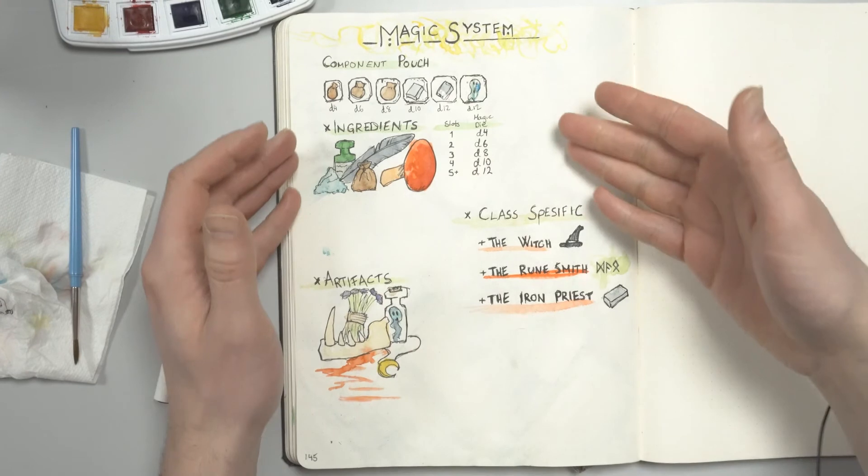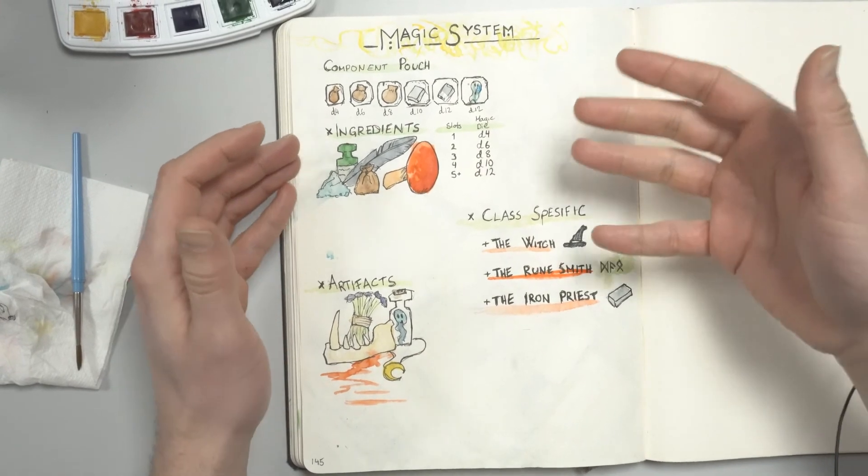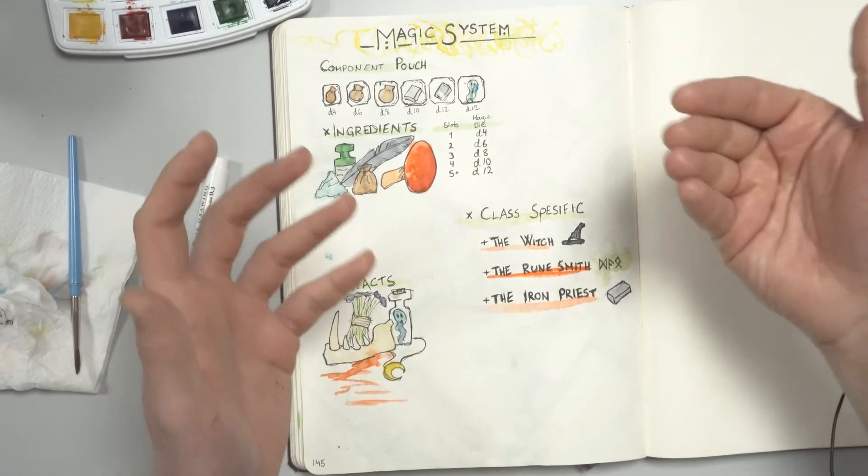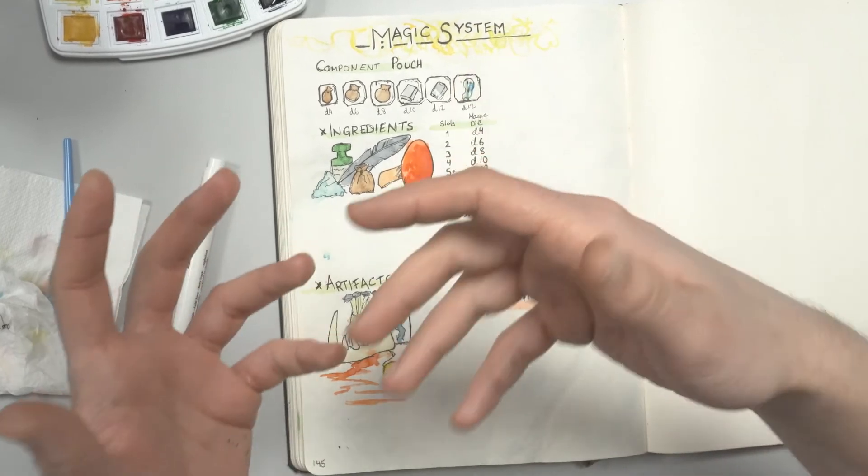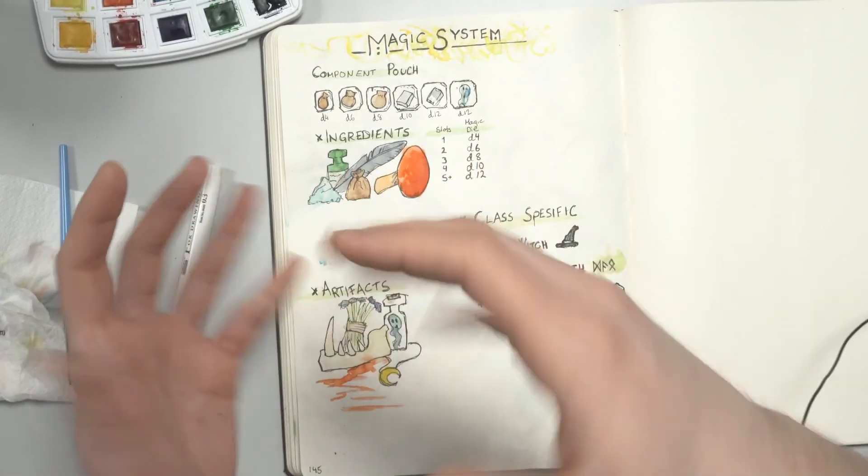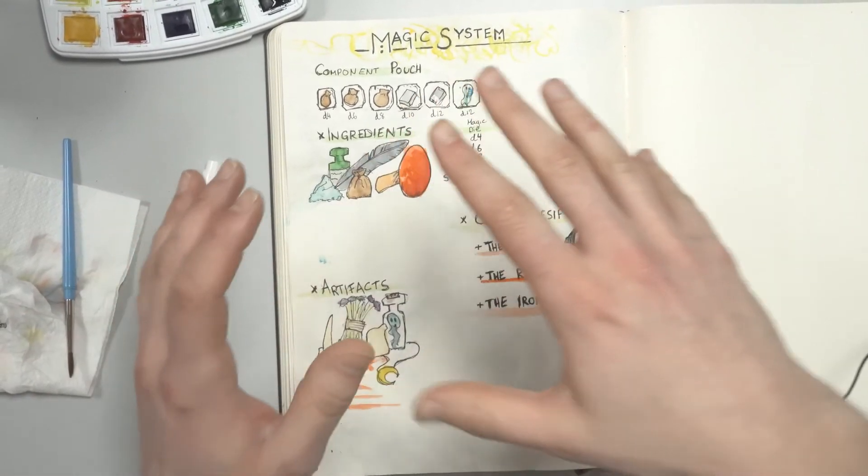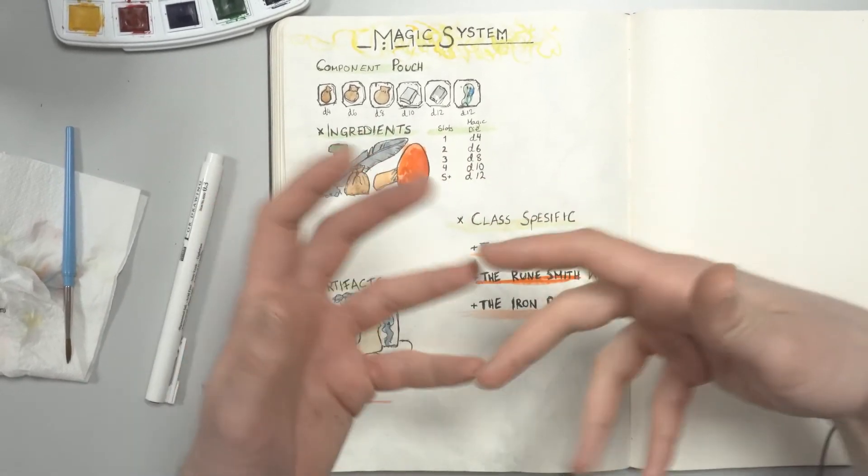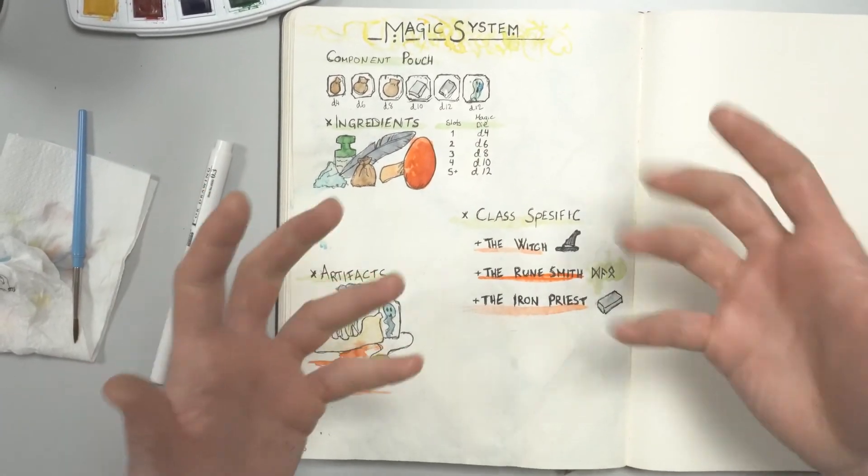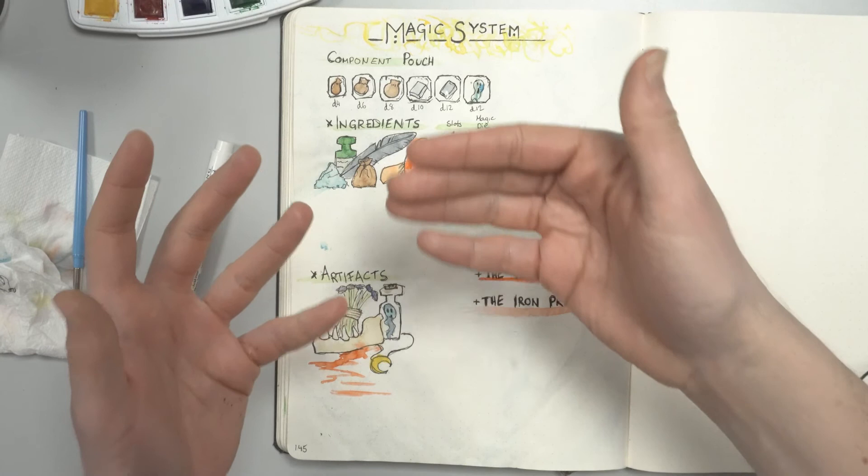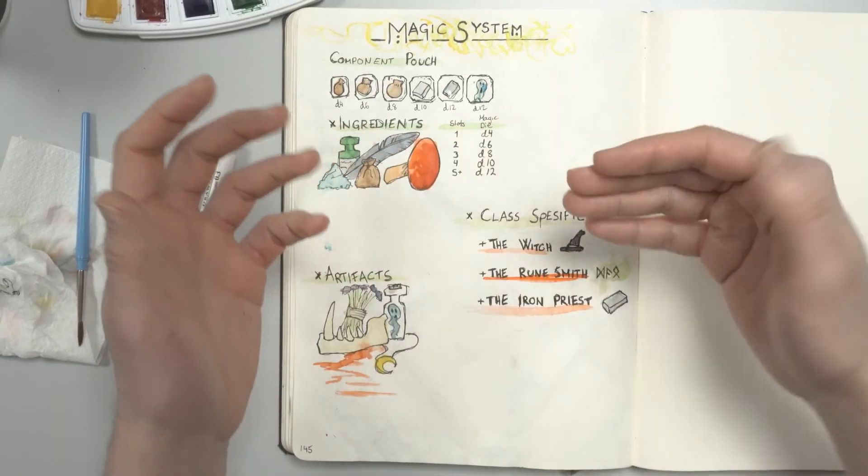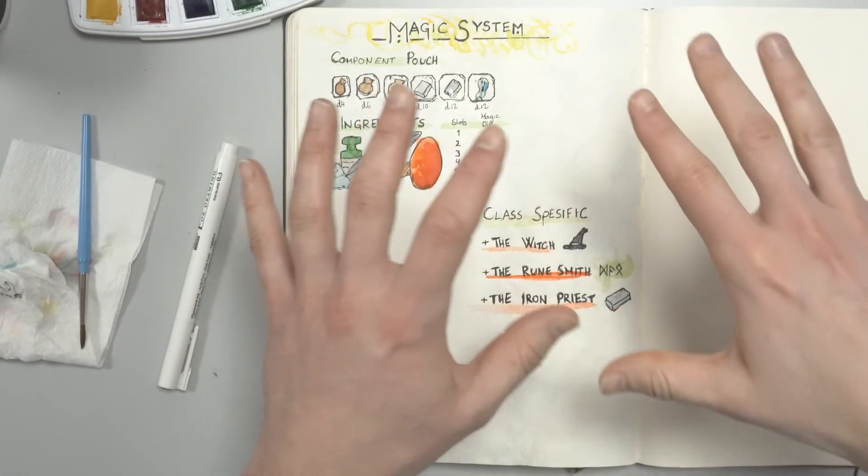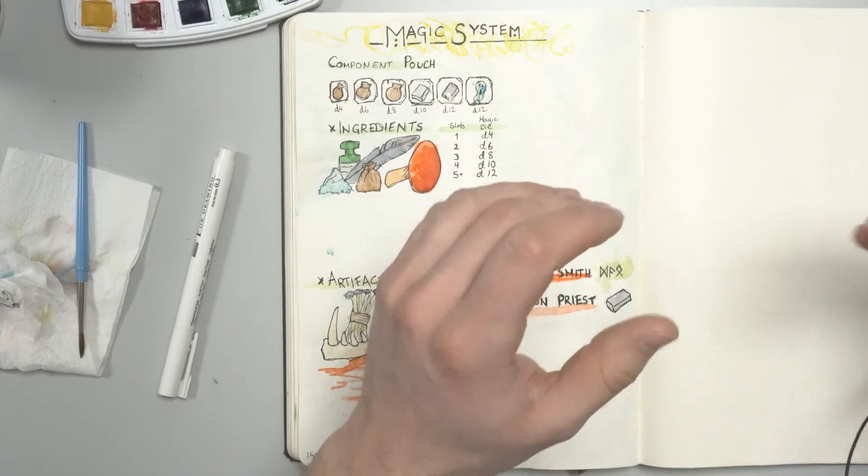The limited number of slots also give the players decisions. Do you aim for few heavy-hitter spells for specific purposes or many weak spells for multiple purposes? Do you risk losing resources by choosing powerful spells or save it for casting many weak spells?